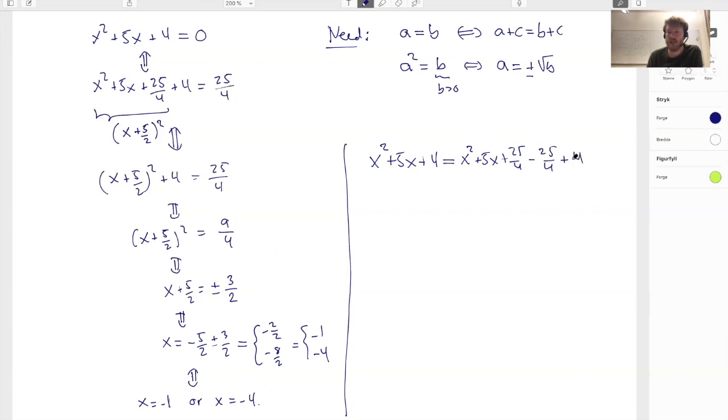So actually, I'm just adding by 0 here. And this is a 4. Now, as before, I can make this into a square like this. And this 4 here is the same as 16 divided by 4, which together here makes this minus 9 fourths like this.